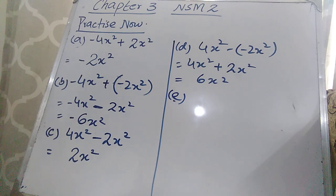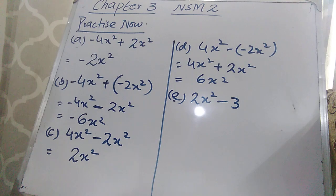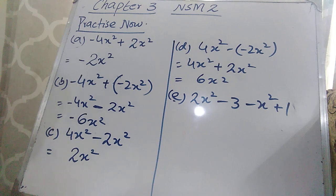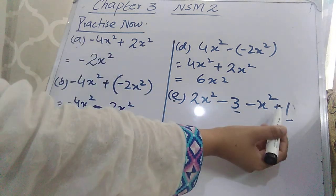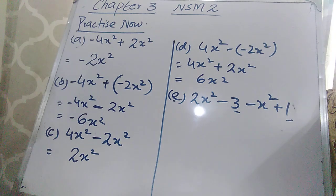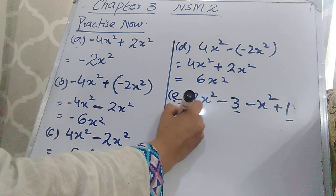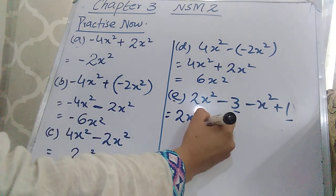For part (e): (2x² − 3) − (−x² + 1). You must solve like terms together. The x² terms are like terms, and the constants are also like terms. First group the like terms together: write the x² terms — 2x² and −x² — together, then the constants −3 and +1 together.